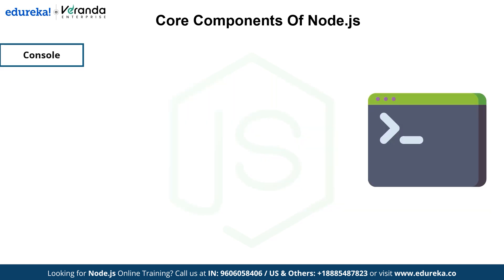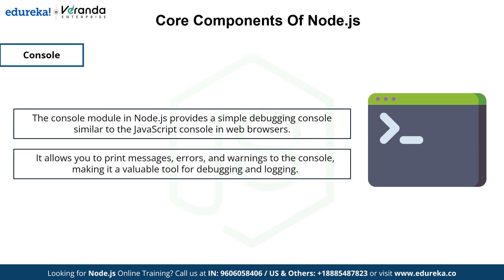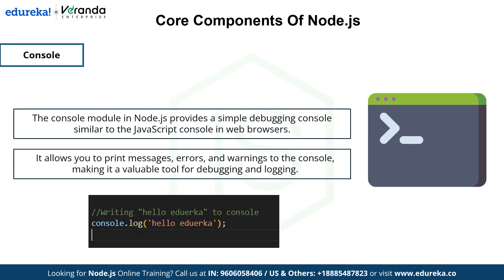The next component is console. The console module in Node.js provides a simple debugging console similar to the JavaScript console in web browsers. It allows you to print messages, errors, and warnings to the console, making it a valuable tool for debugging and logging. For instance, console.log('hello edureka') will output 'hello edureka' in the console.